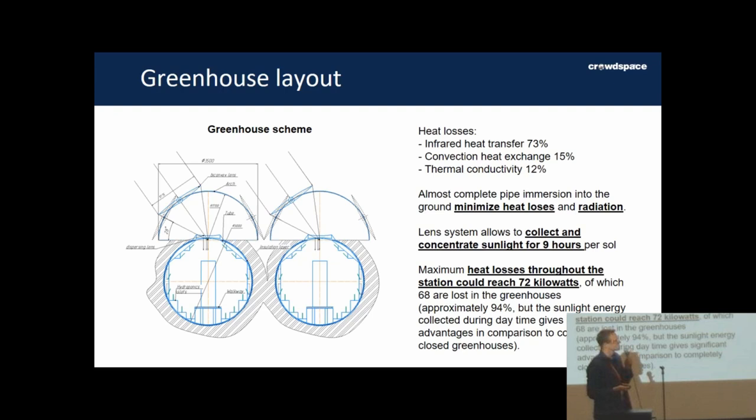Right now there are different researchers that discuss if it's possible to grow food on the surface or if it should be grown subsurface. We decided to select something in the middle, so we still put the greenhouse under the surface, but there is access from the sunlight to these greenhouses. This is how we can at the same time reduce radiation level and get natural sunlight to grow food in a regular way.